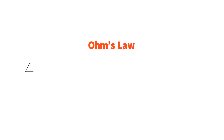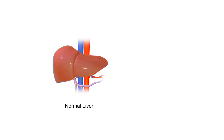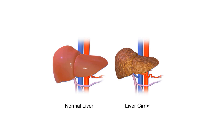The cause of portal hypertension can be described by components of Ohm's law: delta pressure equals blood flow times resistance. In portal hypertension, the increased difference in blood pressure is due to an increase in resistance to blood flow through the liver. This increased resistance to blood flow is a common result of a diseased liver, such as a liver with cirrhosis.